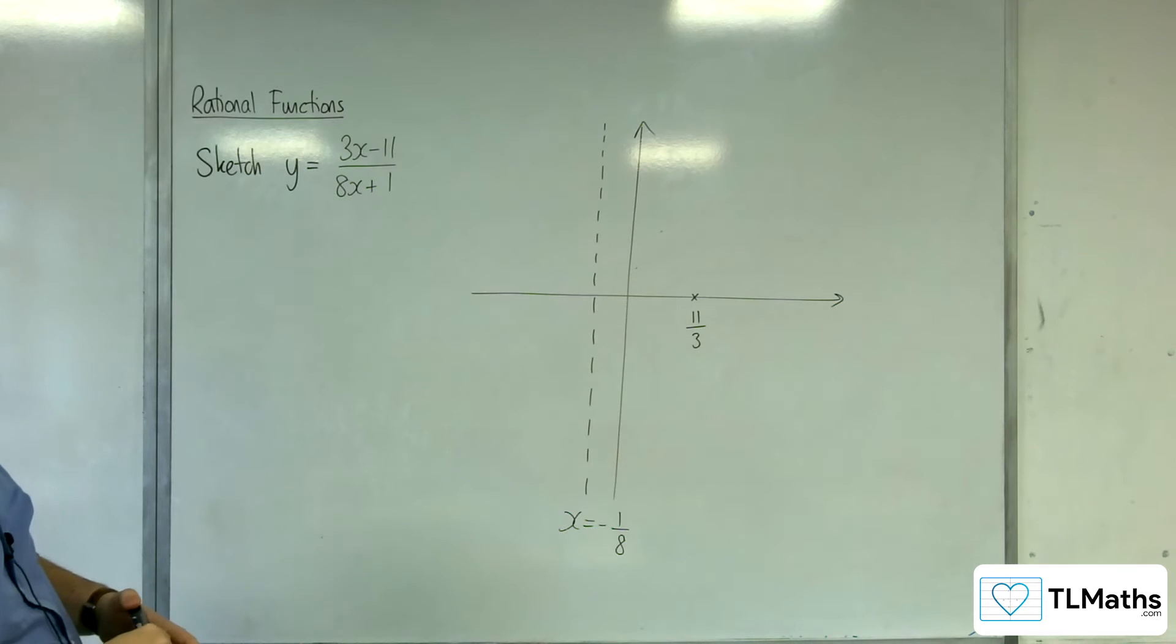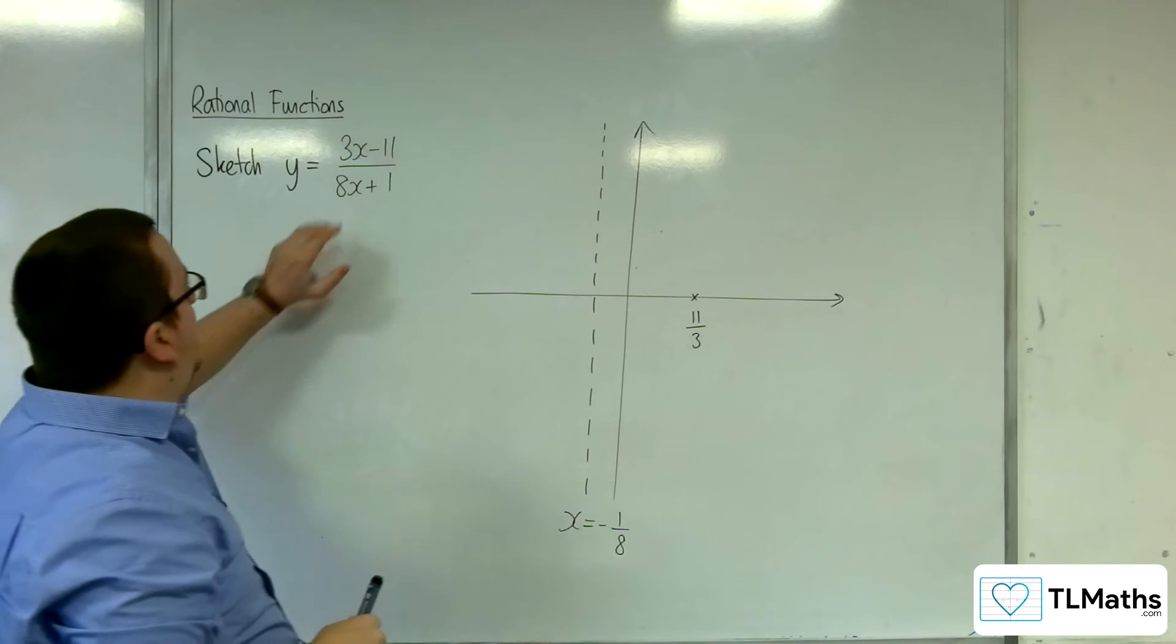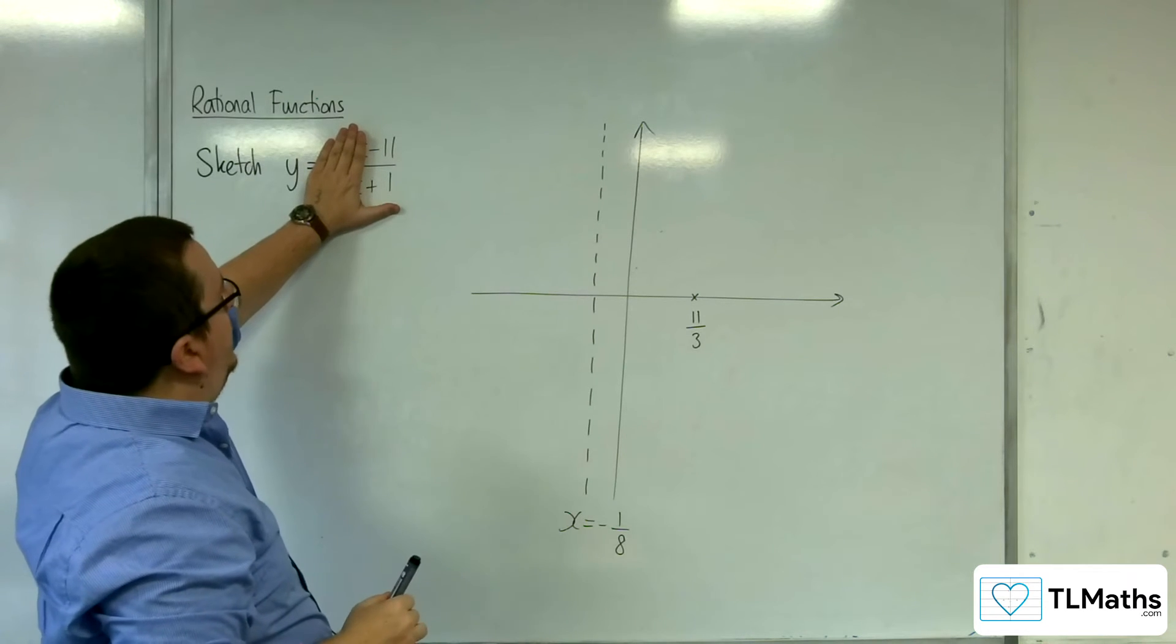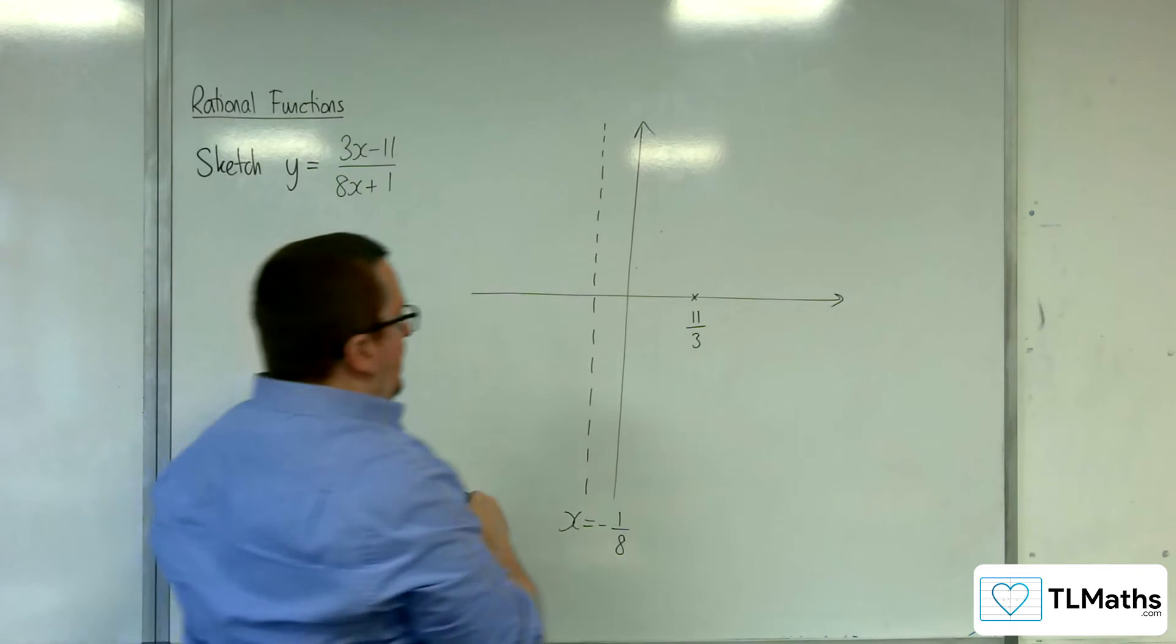Where is it crossing the y-axis? That's when x is 0. So that's at minus 11 over 1, so minus 11.